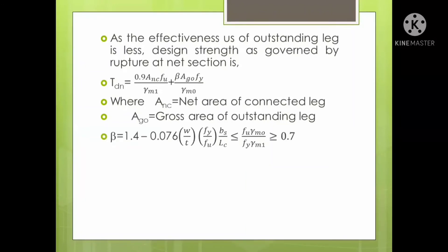Beta is a factor given by: β = 1.4 − 0.076 × (W/T) × (FY/FU) × (PS/LC). This should be less than or equal to FU × γMO / (FY × γM1), and should be greater than or equal to 0.7, meaning beta must lie between 0.7 and that upper bound.